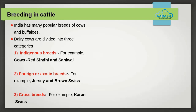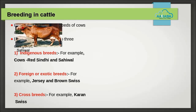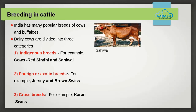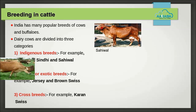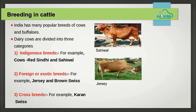Breeding in cattle: India has many popular breeds of cows and buffaloes. Dairy cows can be broadly divided into three categories. 1. Indigenous breeds — these are desi or local breeds native to India, showing excellent resistance to diseases; examples are Red Sindhi and Sahiwal. 2. Foreign or exotic breeds — these have long lactation periods; examples are Jersey and Brown Swiss. 3. Crossbreeds — breeds chosen for crossbreeding have favorable characters that become part of the offspring; for example, Karan Swiss.